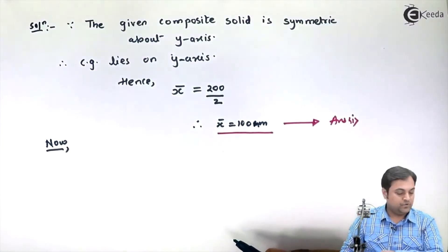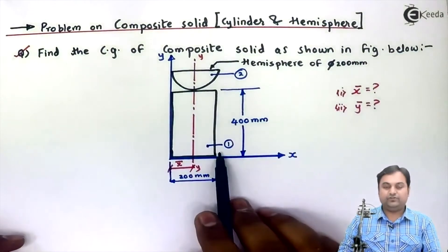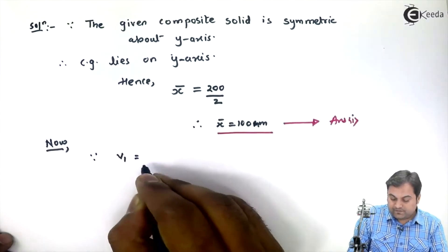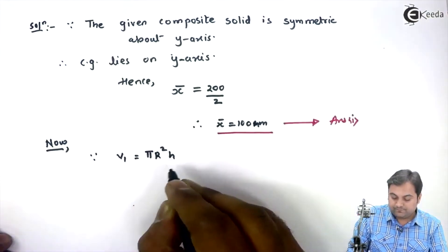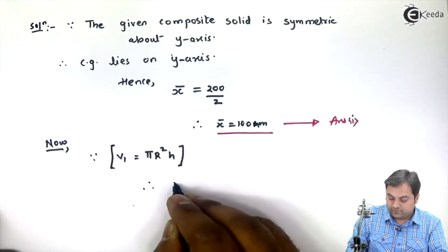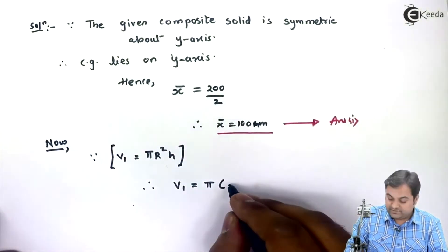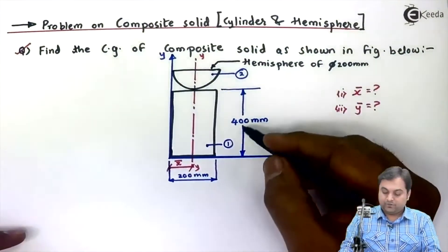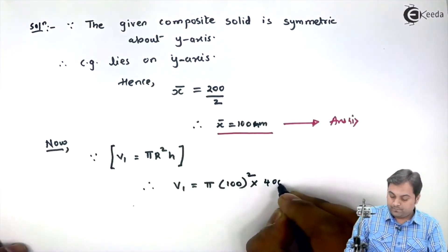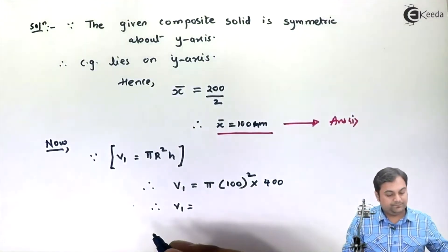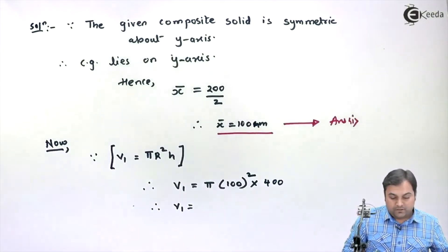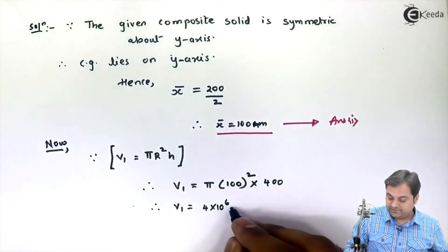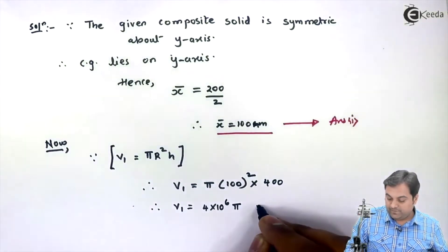Next we will calculate Y-bar, for which we require the volume and distance Y for each solid. For the first solid, the cylinder, V1 equals π r² h. So V1 equals π times 100 squared times 400, which gives V1 equal to 4 × 10⁶ π mm³.